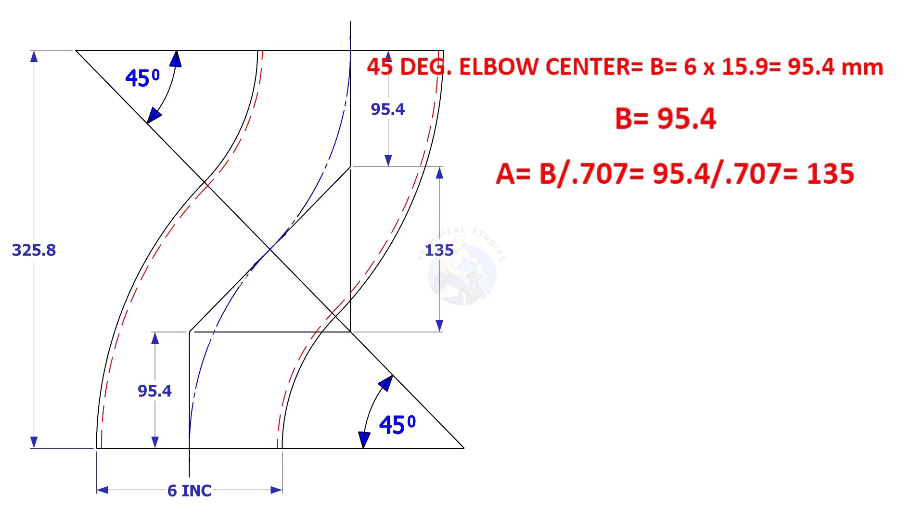A is B divided by 0.707, is 135 millimeters. C is equal to 2B plus A, is equal to 325.8 millimeters.